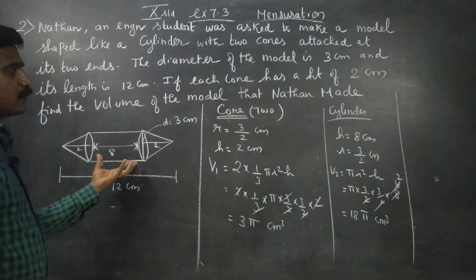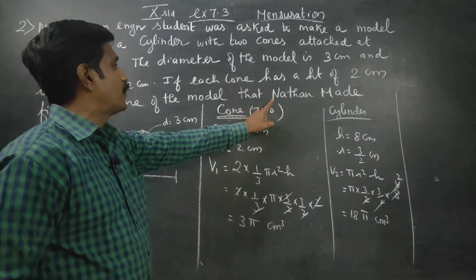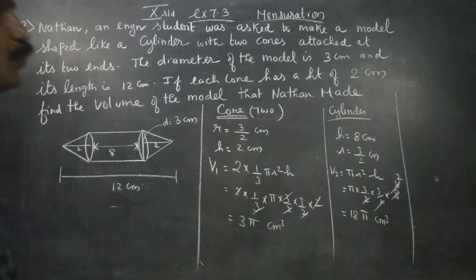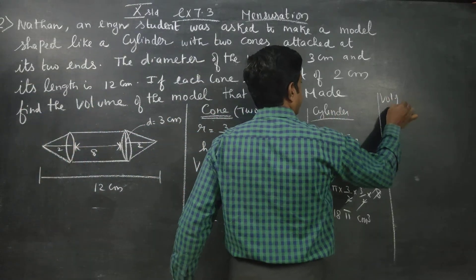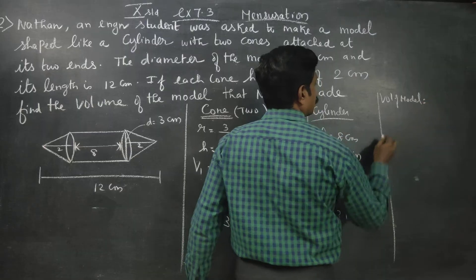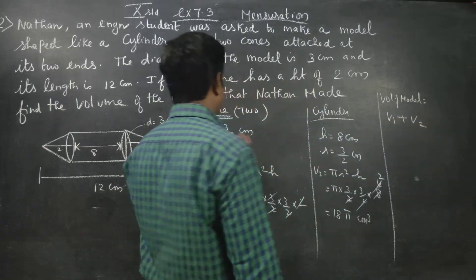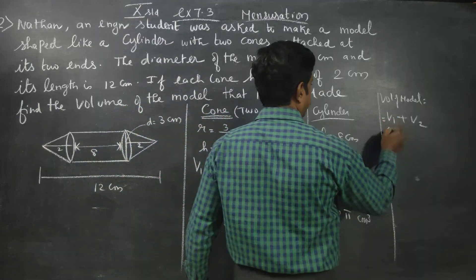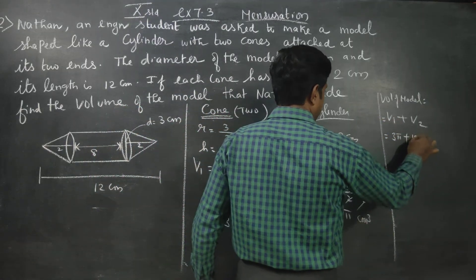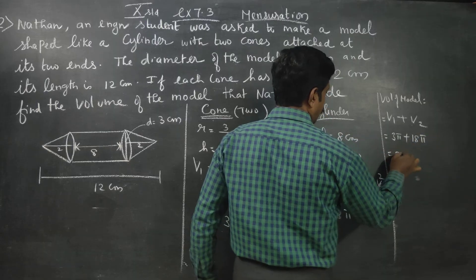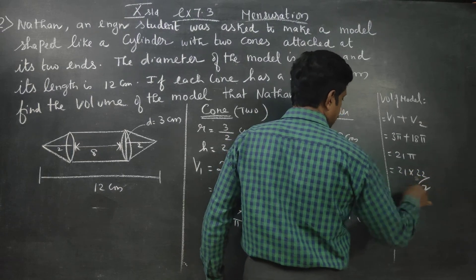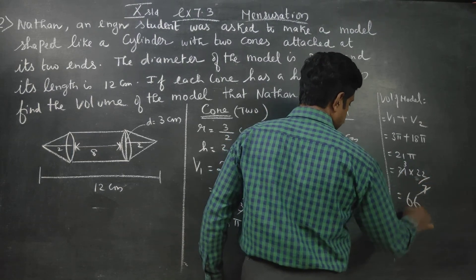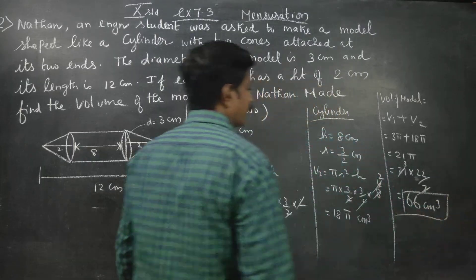To find the total volume of the model, volume of model equals V1 (two cones) plus V2 (cylinder), which is 3π plus 18π equals 21π. Substituting 22/7: 21 × (22/7) = 3 × 22 = 66 centimeters cubed. The volume of the model is 66 cm³.